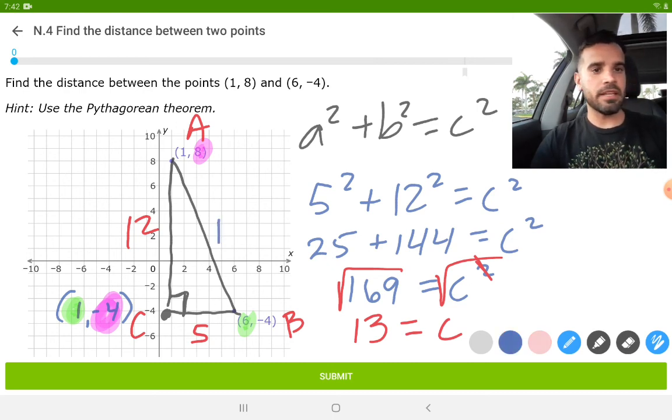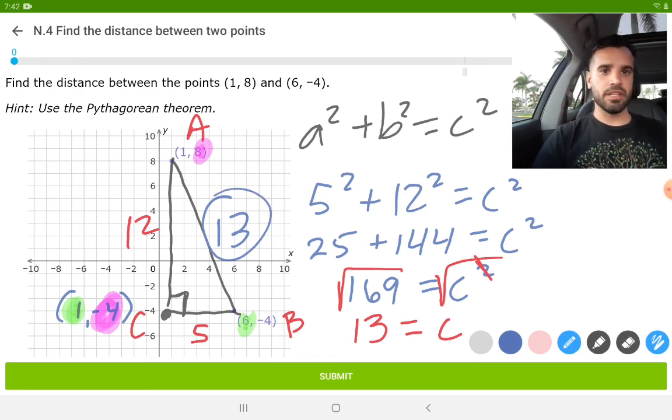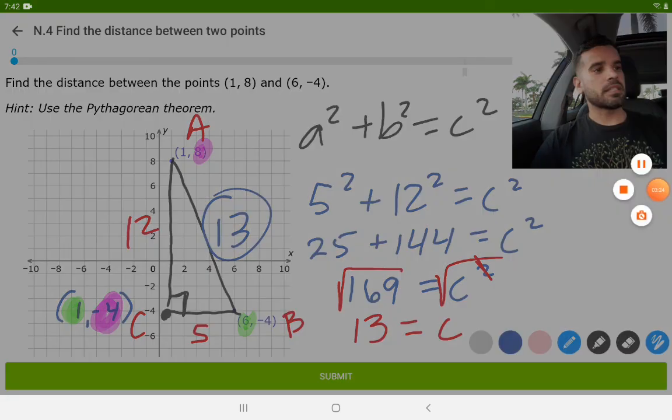And there you have it. We can write that into our problem. The distance from A to B is 13 units. Catch you on the next episode.